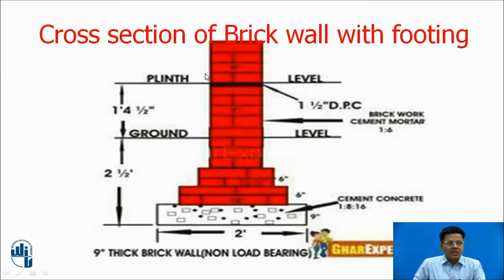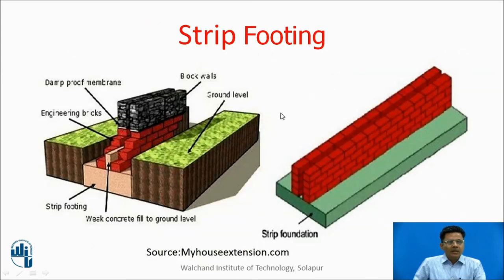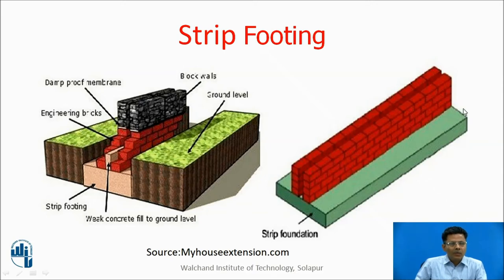This is a cross section of a brick wall with footing. This is the brick wall, these are the steps provided, and it is constructed over a cement concrete 1:4:8 footing. Whenever we have a load-bearing brick wall or masonry wall, we provide a strip type of foundation as shown.